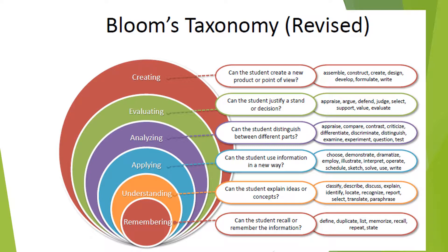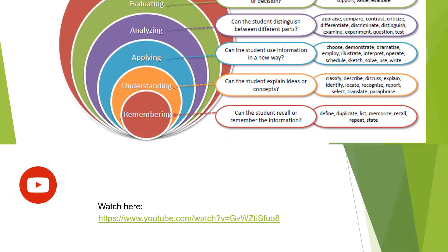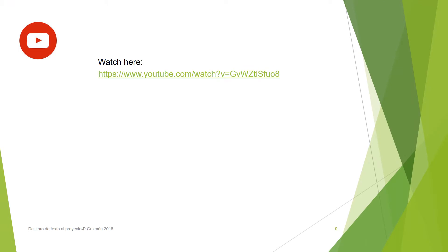On the right you have some verbs that are related to the different steps in Bloom's taxonomy. Remember that we have always tried to go up in this taxonomy and help our students reach the creating zone. These verbs will help you when you plan objectives and goals. Now watch the suggested video where you have the explanation of Bloom's taxonomy and the difference between HOTS — higher order thinking skills — and LOTS — lower order thinking skills — and then come back here.